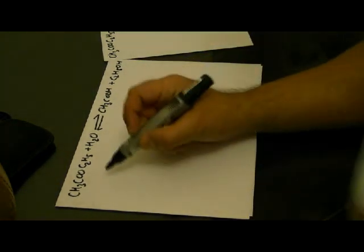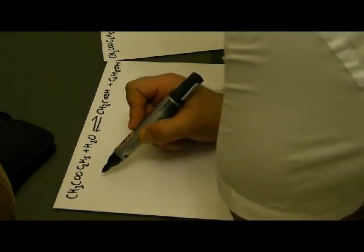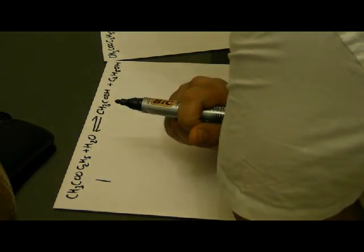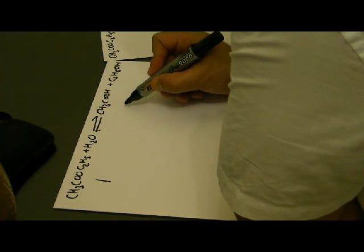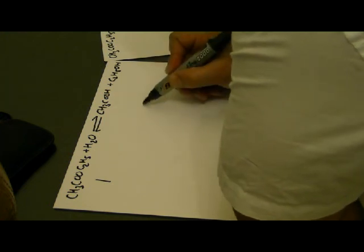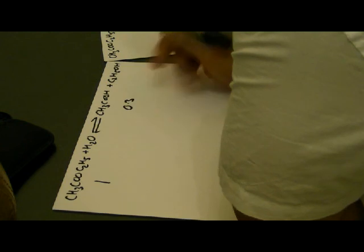In the question, you start with one mole of ethyl ethanoate and at the point of equilibrium you'll have 0.3 moles. I'll write that under it, 0.3 moles of ethanoic acid.